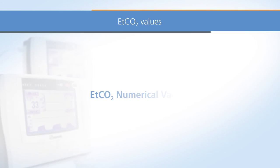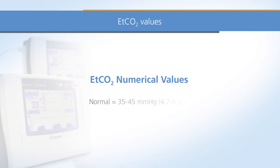End tidal CO2 values are usually expressed in millimeters of mercury. Normal end tidal CO2 is typically between 35 and 45 millimeters of mercury.